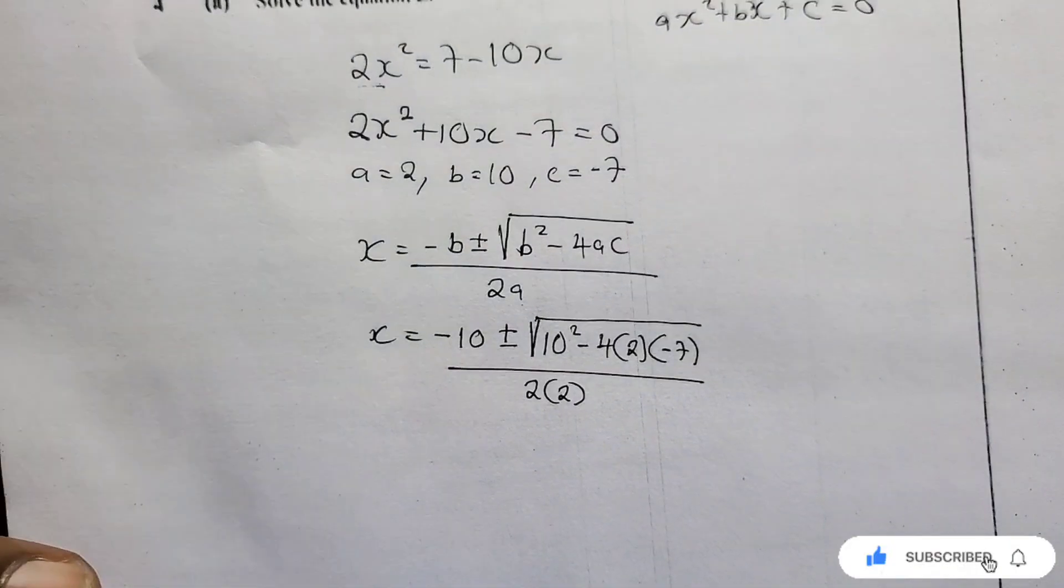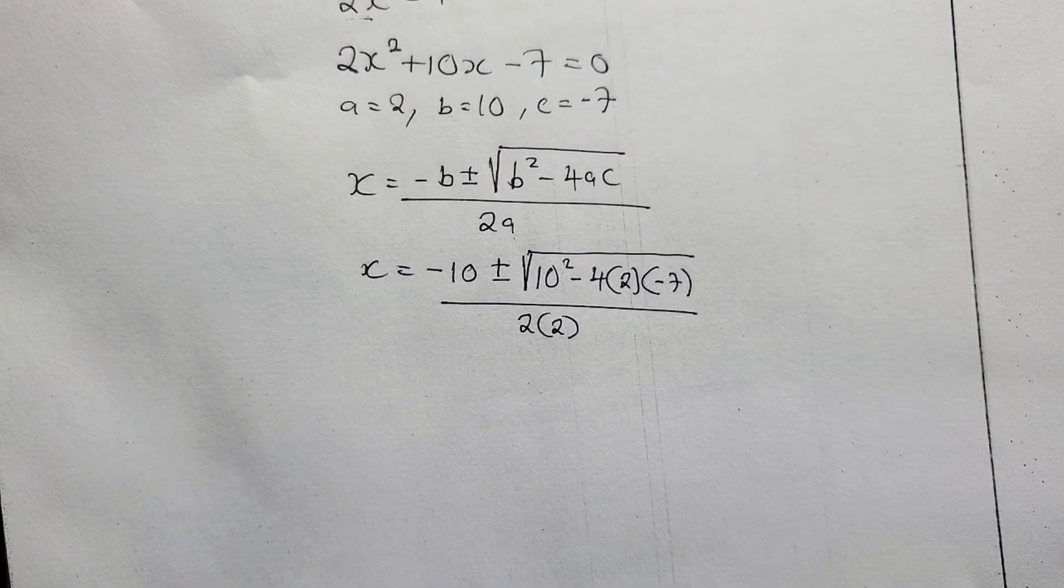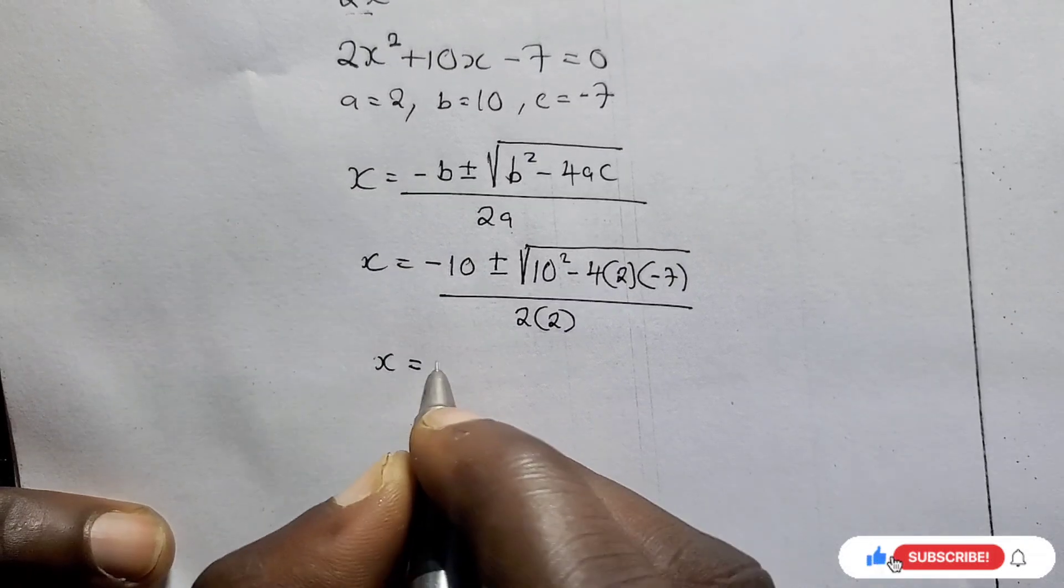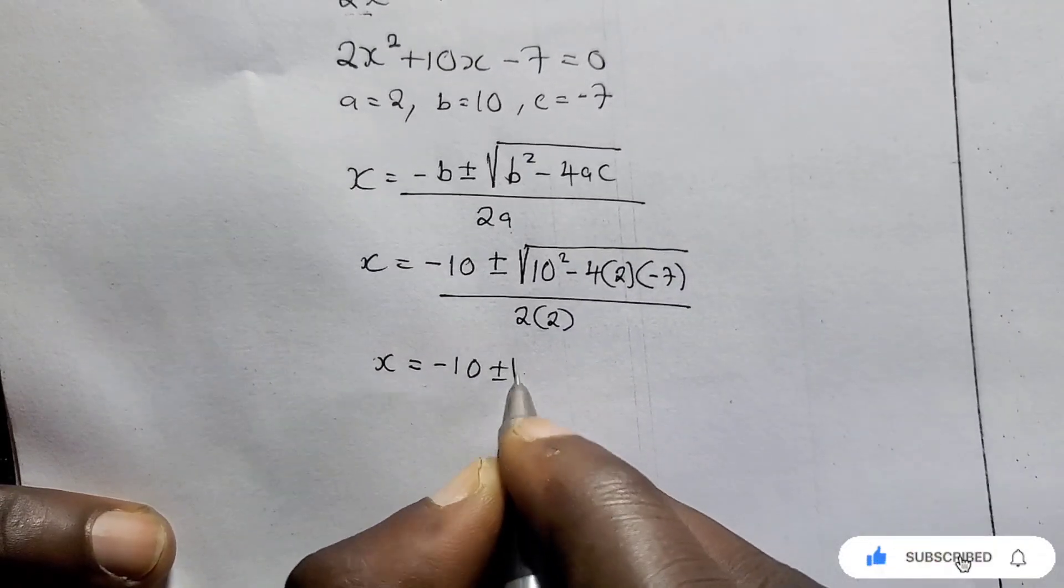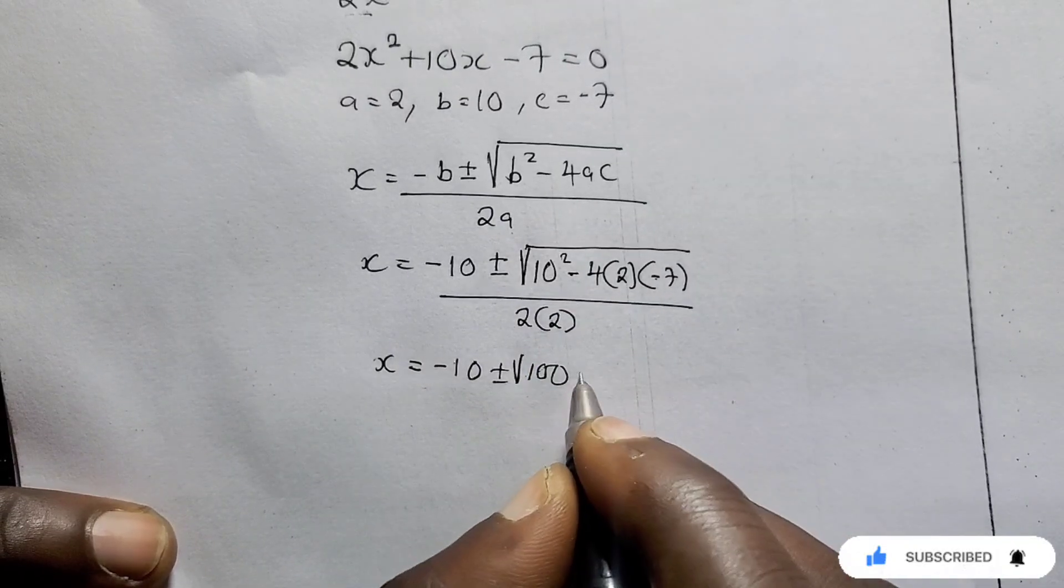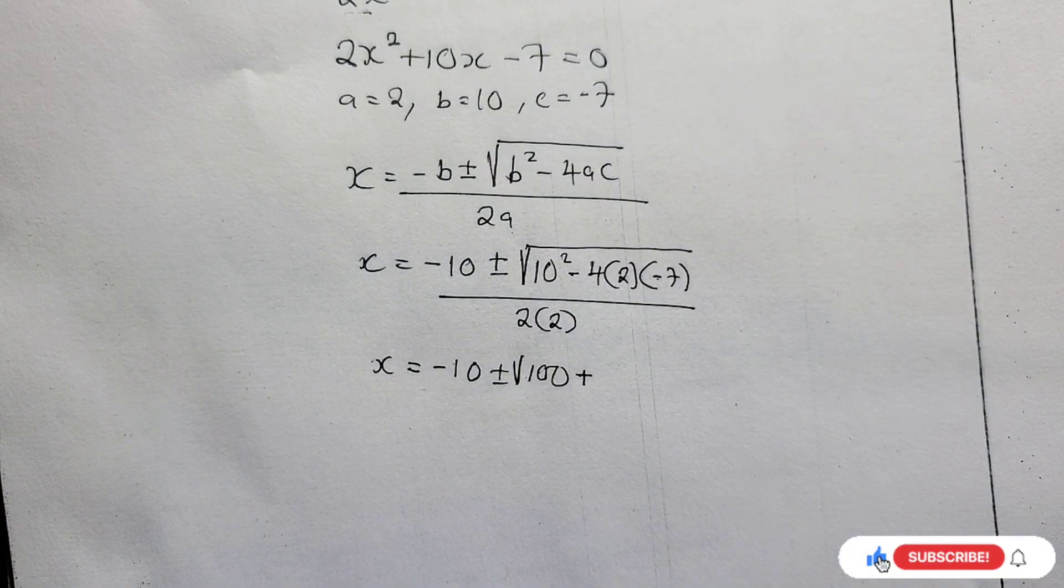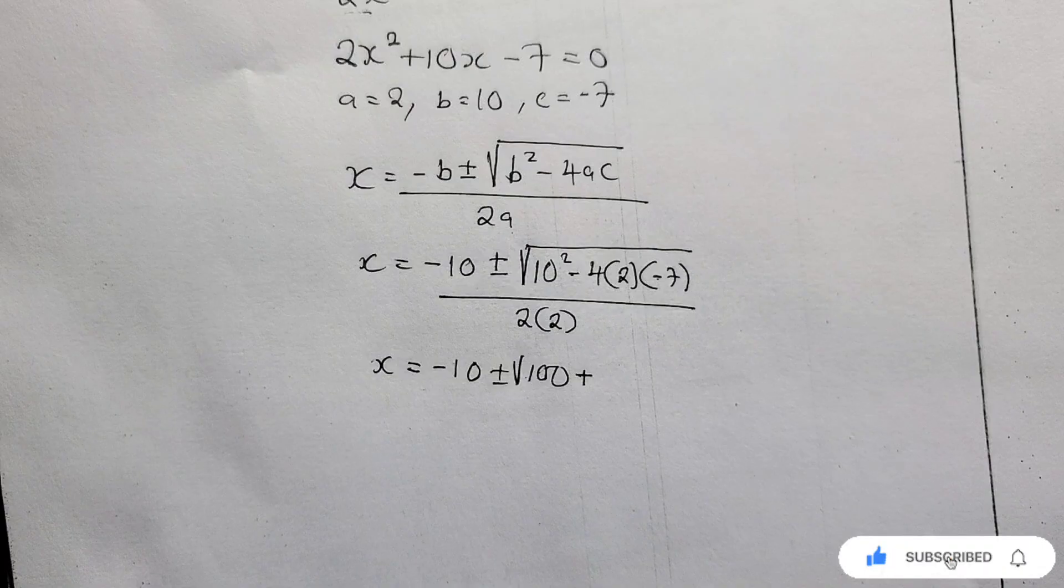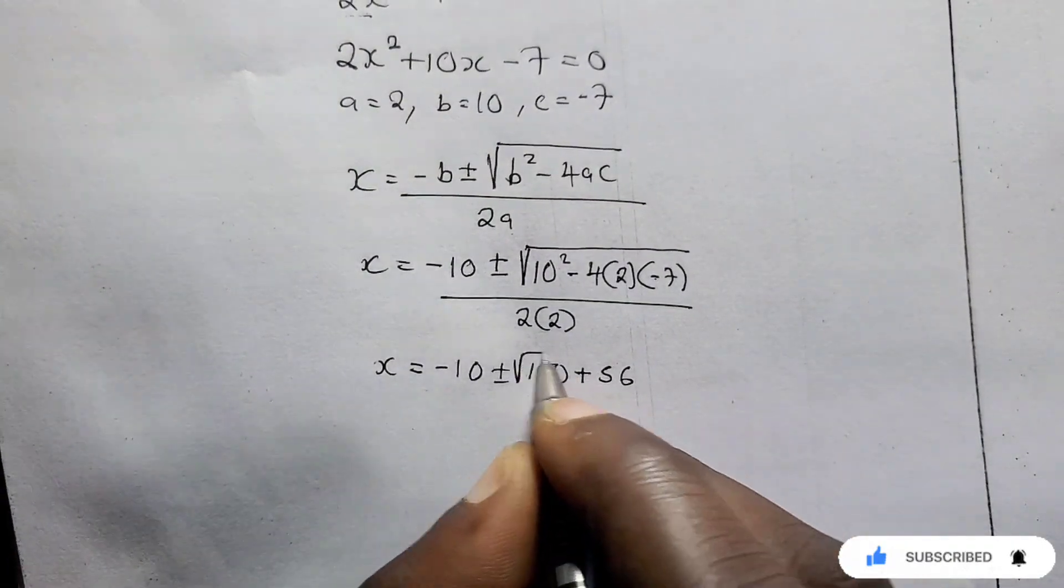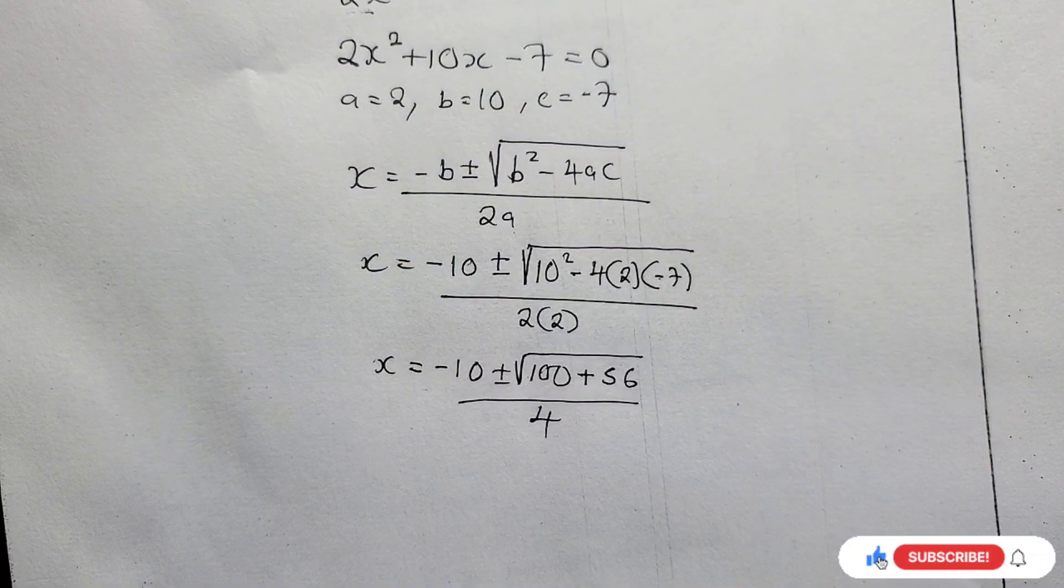I have just substituted. So this is how you substituted. Now let's solve. So we have X equals negative 10 plus minus. We're solving this. 10 squared is 100. Negative times negative here is positive. Negative 4 times 2 is 8. Then 8 times 7 is 56. So we have 56 over 4, because 2 times 2 is 4.